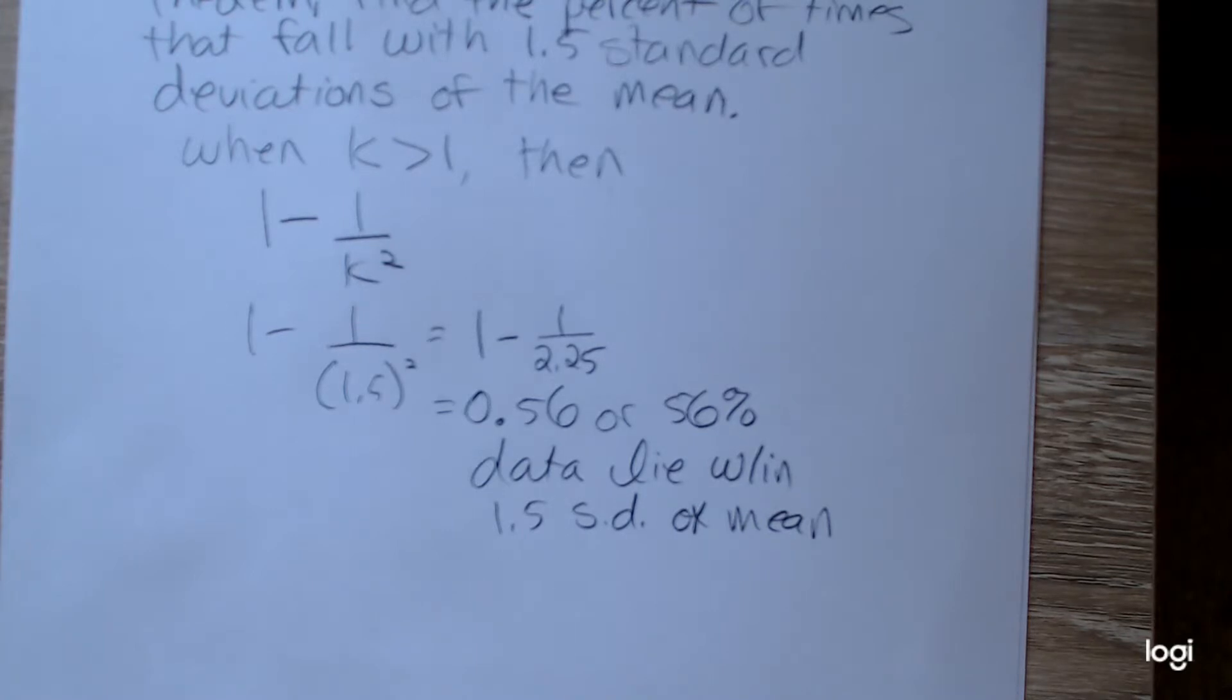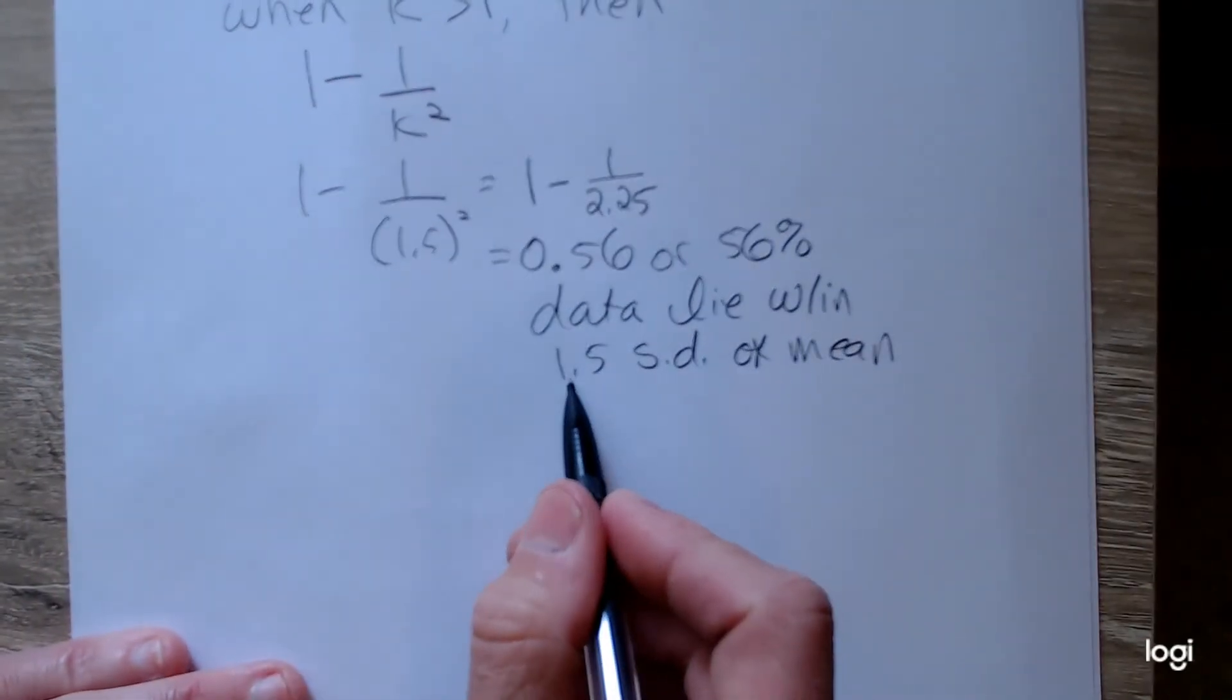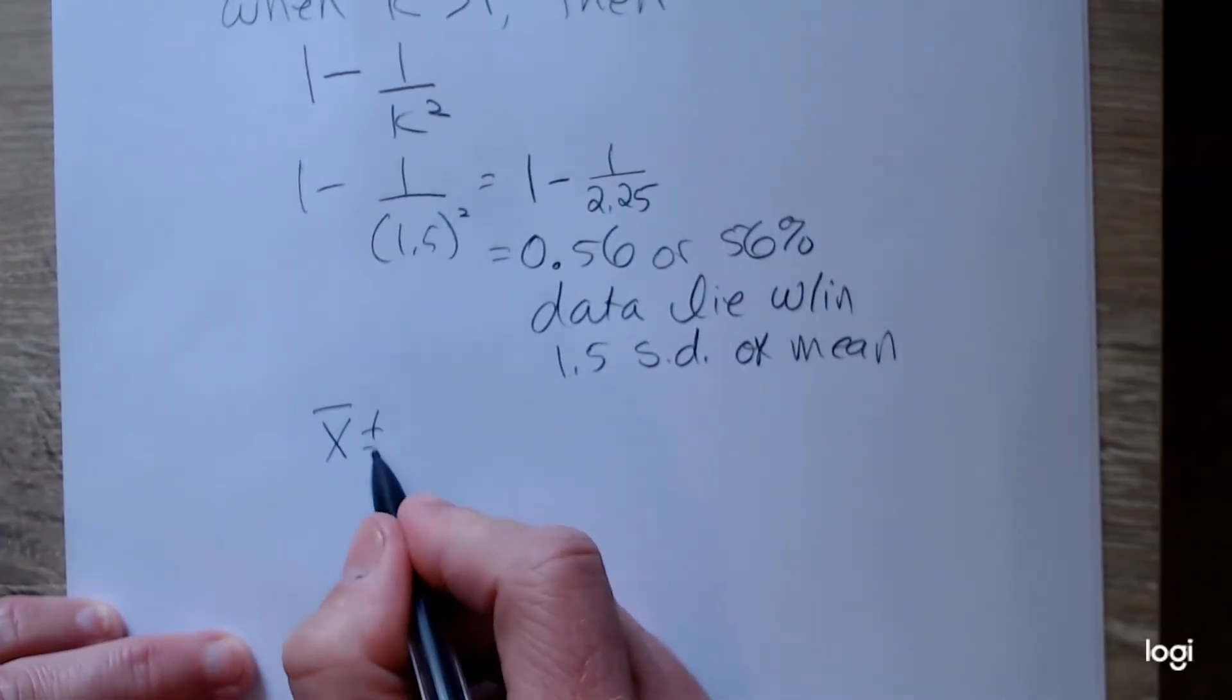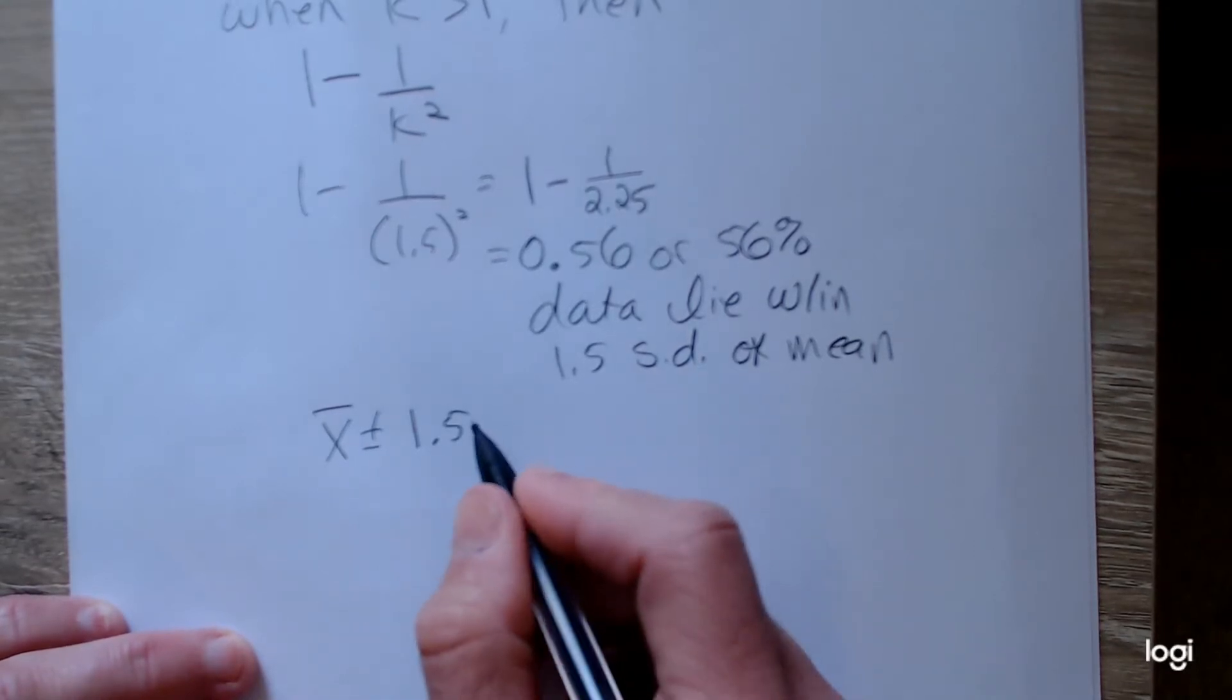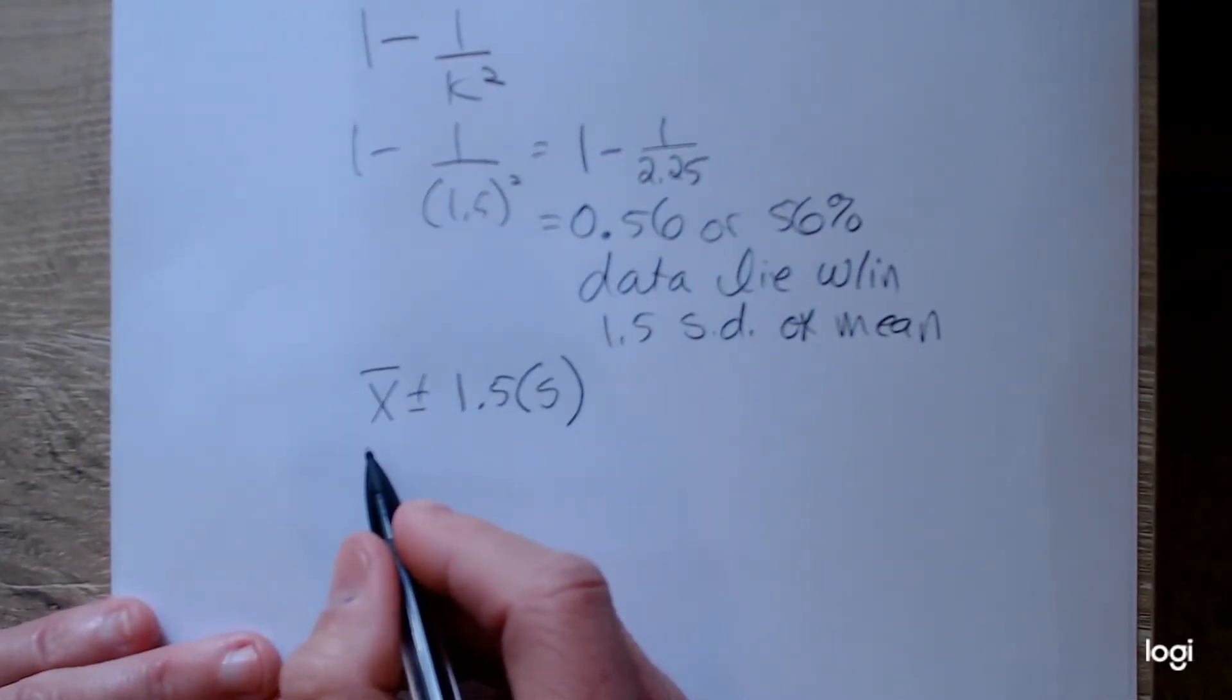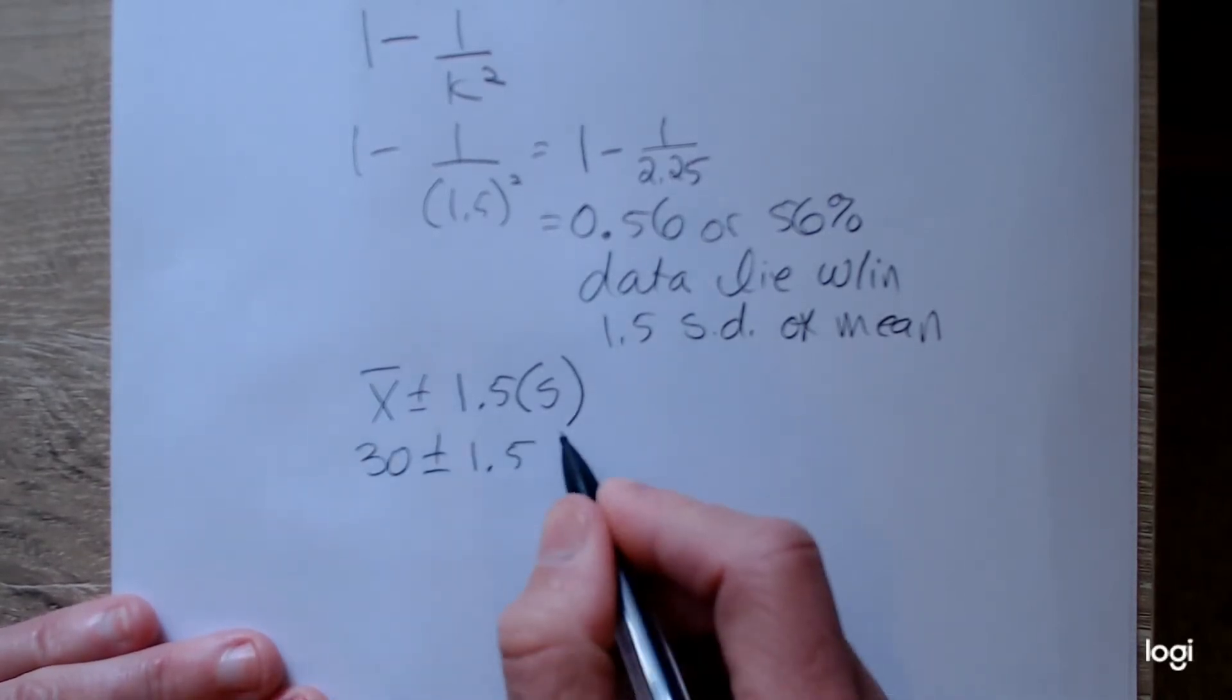So what would that interval be? Well, that interval would go between x bar plus or minus 1.5 times s, and plugging in the values from the problem, I have 30 minutes plus or minus 1.5 times 5.